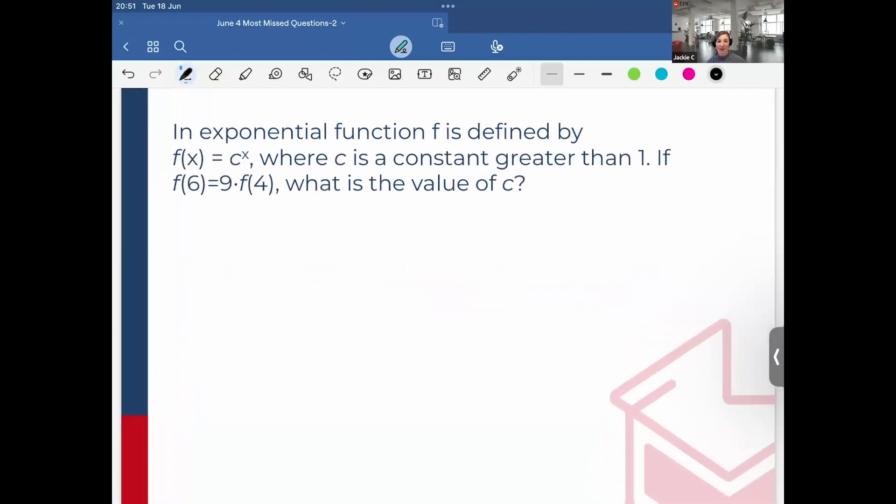So first one is an exponential function. An exponential function f is defined by f(x) equals c to the x power, where c is a constant greater than one. If f(6) equals 9 times f(4), what is the value of c?